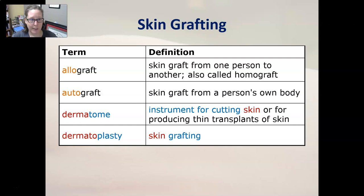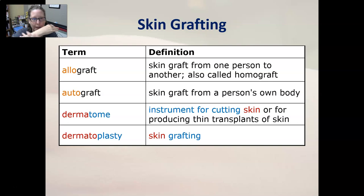Skin grafting usually happens in the aftermath of a burn as part of a healing process. An allograft is a skin graft from another person, also called a homograft. This is where a family member or someone related to you donates part of their skin — they can cut it and stretch it, which is really interesting.